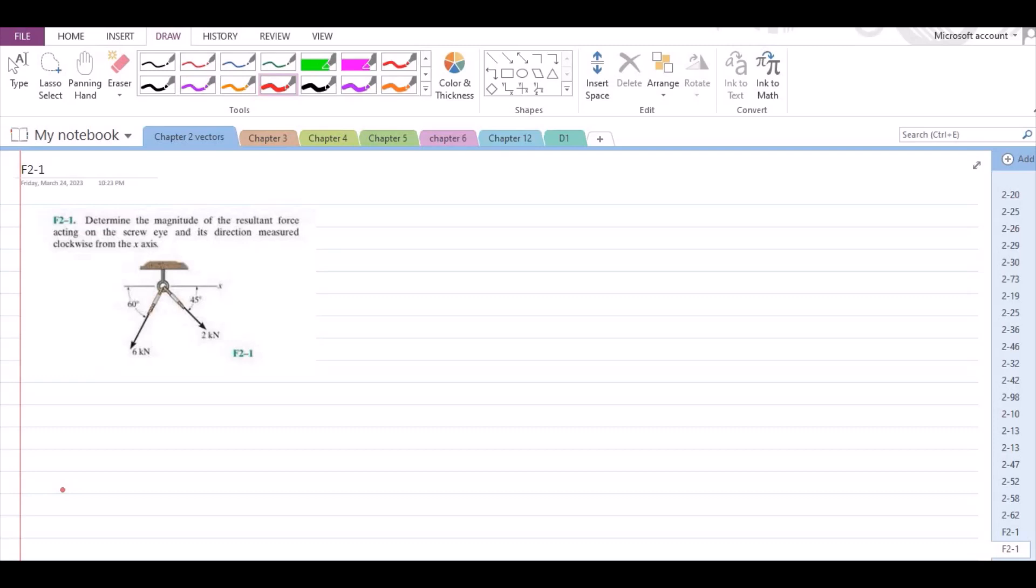Welcome back to the solutions manual. In this video we will solve problem F2-1 from R.C. Hibbeler Engineering Statics, 8th Edition. According to this problem, we have to determine the magnitude of the resultant force acting on the screw eye and its direction measured clockwise from the x-axis. To solve this problem,